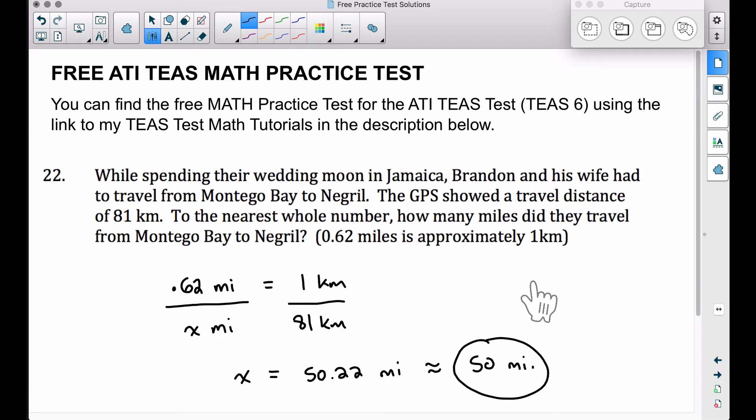Now, this is the classic way to do it, a proportion. Most people probably would tackle it this way. Now, some of you may know, hey, I need to multiply these numbers, but you can get easily confused on when to multiply versus when to divide.